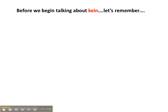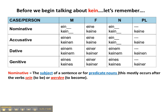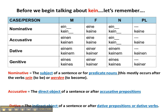Before we begin talking about Kein, let's remember a few things. Kein changes depending upon the case of the noun which it is modifying, just like all other adjectives in German. The nominative is the subject of a sentence or it's used for predicate nouns — this mostly occurs after the verb sein or werden. The accusative is the direct object or it comes after accusative prepositions. And finally, the dative is the indirect object or it comes after dative prepositions or dative verbs.